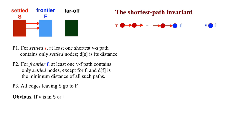Stop the video at this point and convince yourself that if v is in either the settled or the frontier set, the invariant implies that d sub v is 0.